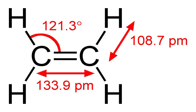The pi bond in the ethylene molecule is responsible for its useful reactivity. The double bond is a region of high electron density, thus it is susceptible to attack by electrophiles. Many reactions of ethylene are catalyzed by transition metals, which bind transiently to the ethylene using both the pi and pi asterisk orbitals.